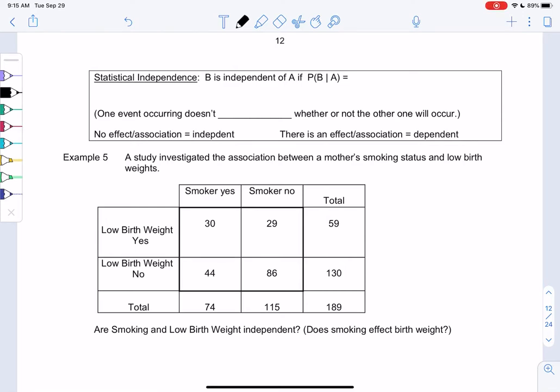Alright, so let's see some uses of these conditional probabilities in section 5.3. We're going to introduce this new thing called independence, statistical independence.